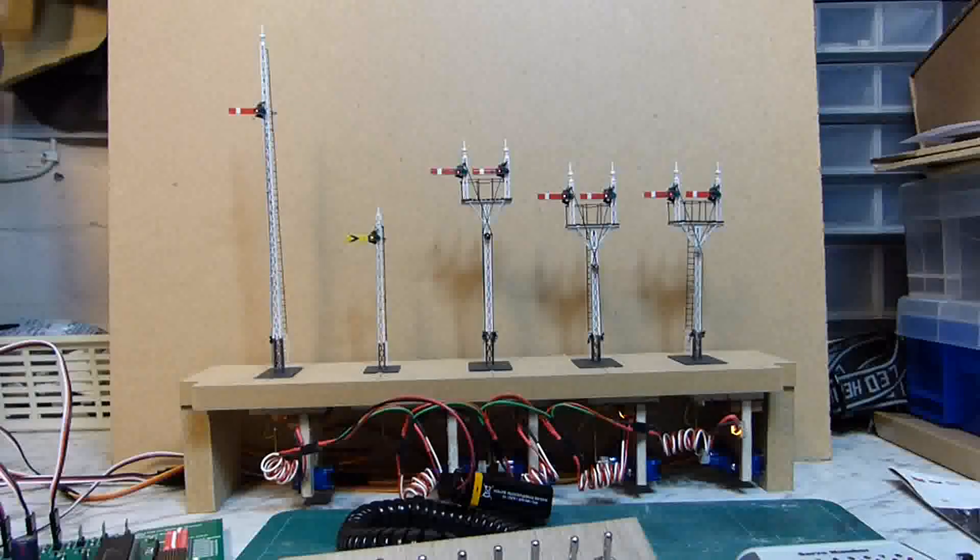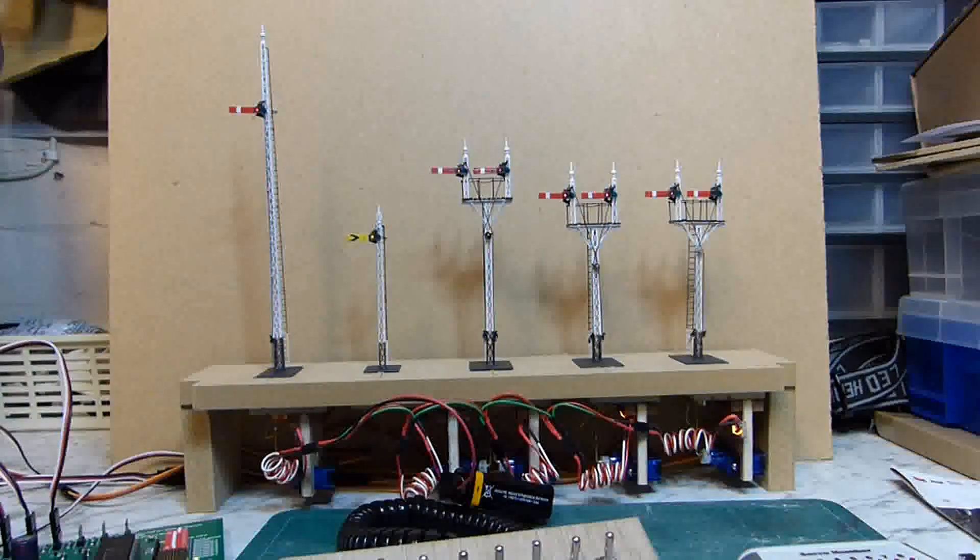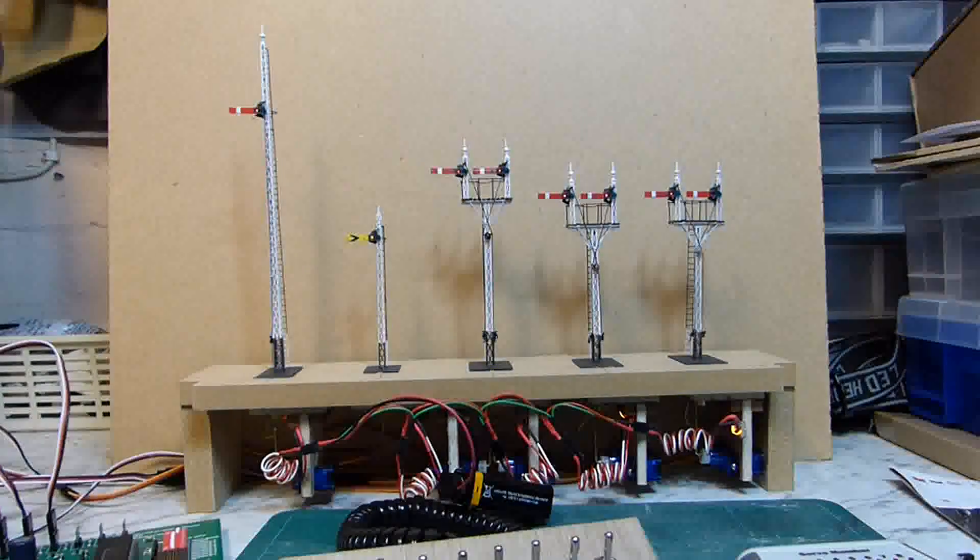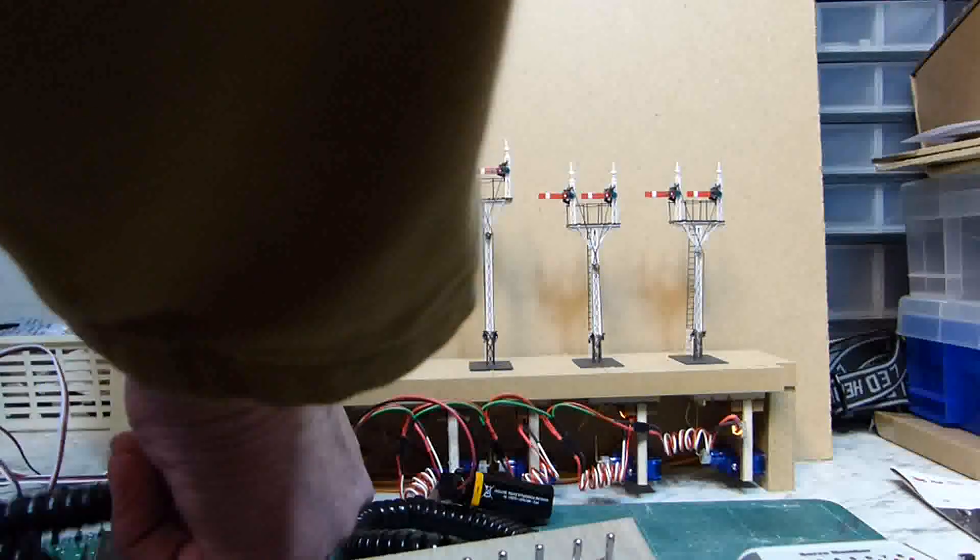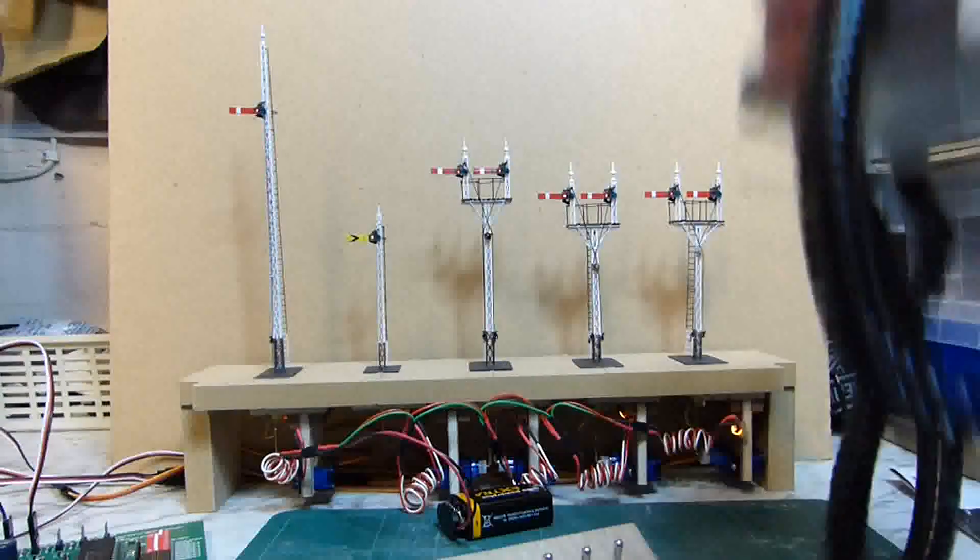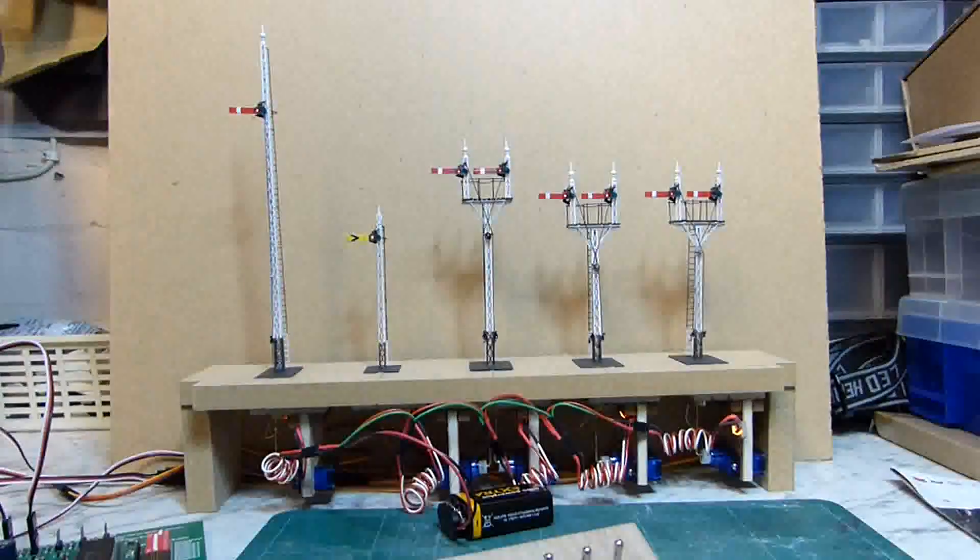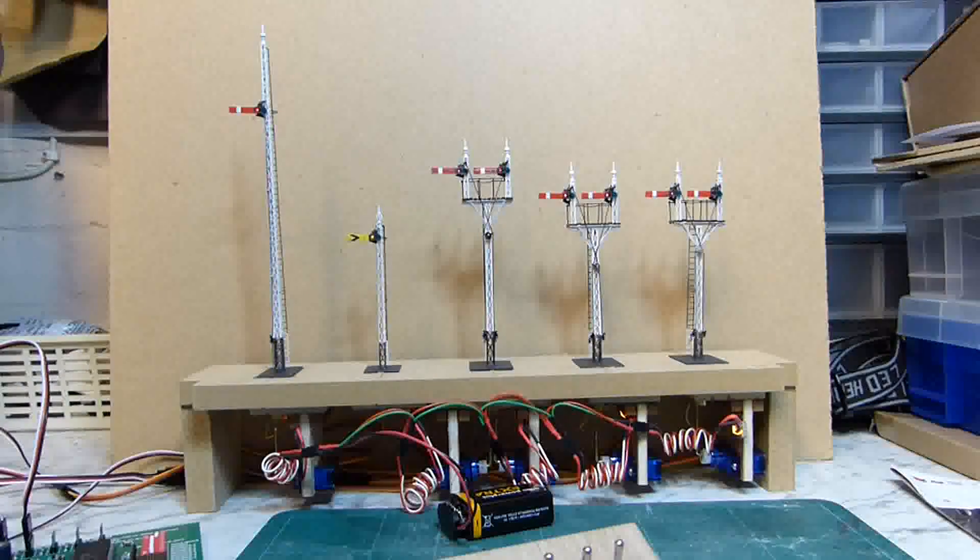It's now time to disconnect the setter box. So first of all we turn off the power, disconnect the setter box from the servo board, put that to one side and reconnect the power again.